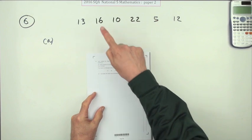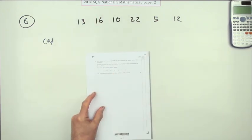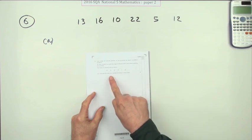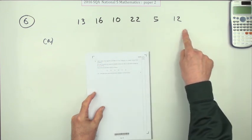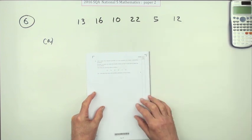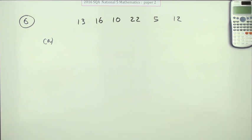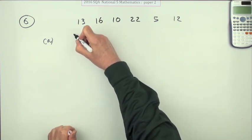Number six from paper two of the 2016 National Five Maths. The standard deviation, four marks for getting the mean and standard deviation of these numbers, waiting times in minutes to get through on a phone connection. We have to set out the table, so I'm going to have a column for x, a column for x minus the mean, and then another column for the square of that.